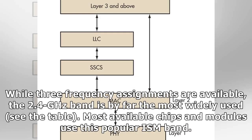Three frequency assignments are available, but the 2.4 GHz band is by far the most widely used. Most available chips and modules use this band.